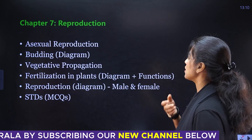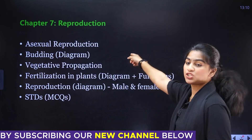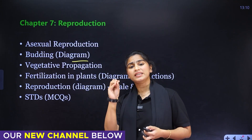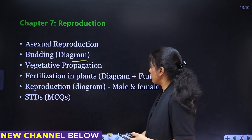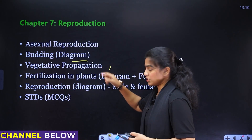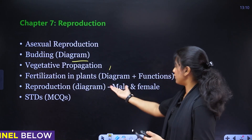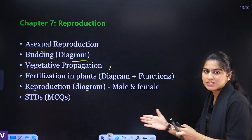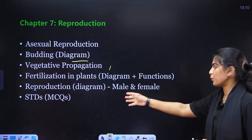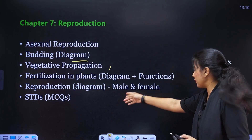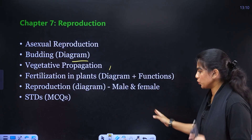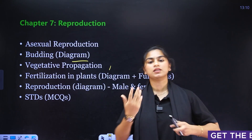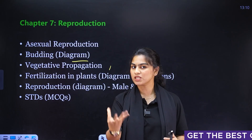Chapter seven is Reproduction. Study asexual reproduction, and the budding diagram is very important. Vegetative propagation and fertilization in plants — diagram plus function — are important. The male and female reproductive system diagrams are also important. STDs are expected in MCQs.